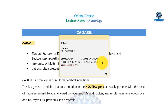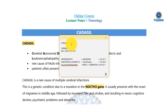The L in CADASIL stands for Leukoencephalopathy. Leuco means white matter, so this refers to white matter lesions. Encephalopathy means dementia. This phase develops at 40 to 50 years, representing early-onset dementia. These are the progressive phases of CADASIL: cerebral autosomal dominant arteriopathy with subcortical infarcts and leukoencephalopathy.